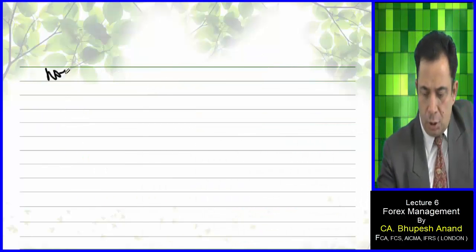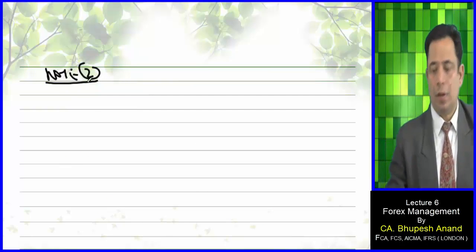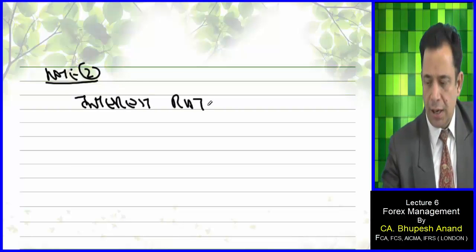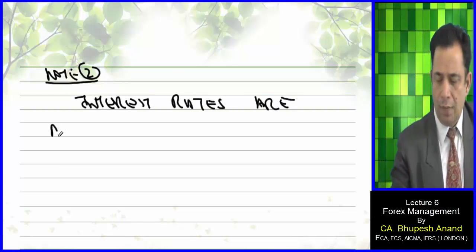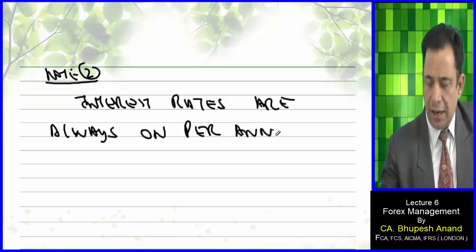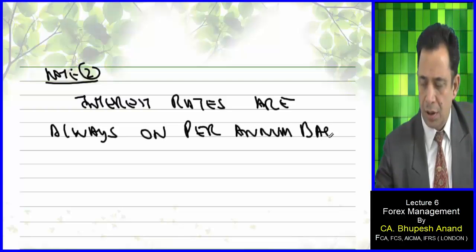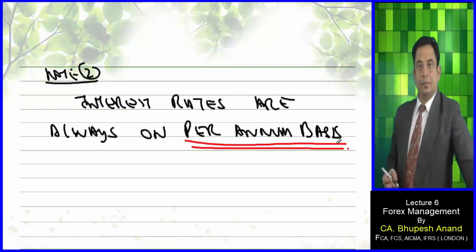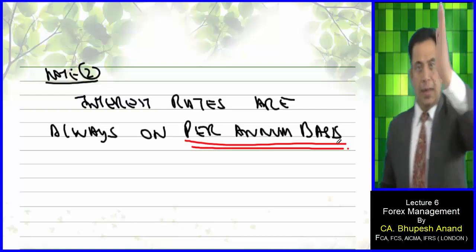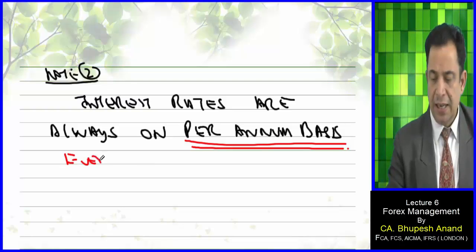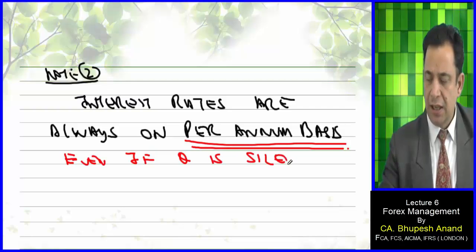Note number 2: Interest rates are always on a per annum basis, even if the question is silent about it — just like inflation rates are always per annum.